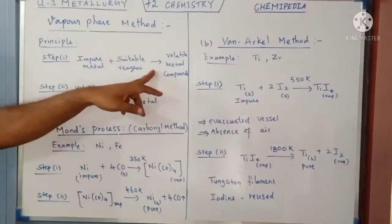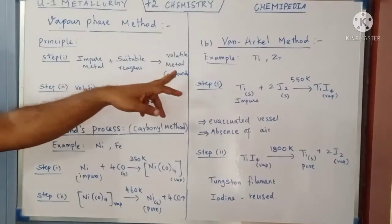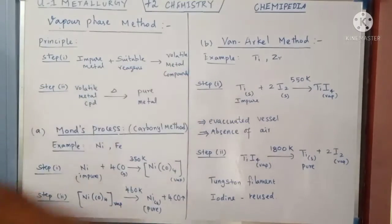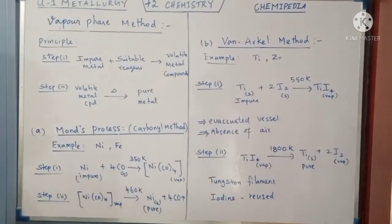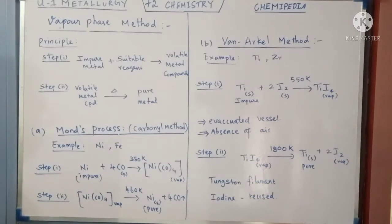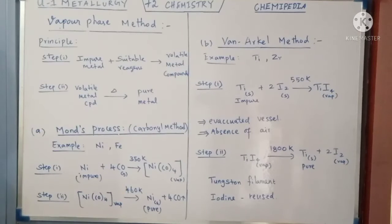As a result of that reaction, the metal will form a volatile metal compound. Once the impure metal is treated with a suitable reagent, the metal alone will react and form a volatile metal compound, leaving behind the impurities in a non-volatile state. So the volatile metal compound can be easily separated from the non-volatile impurities.